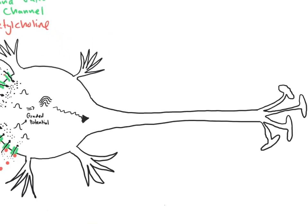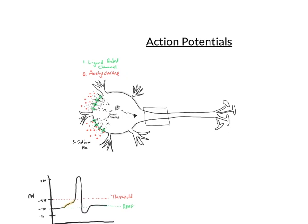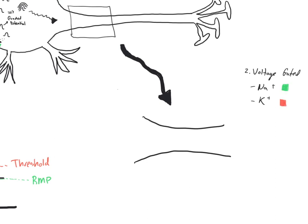We're going to come back up to this picture and examine this specific portion — we're going to zoom right into this portion of the axon. Let's start with our second type of channel. We said ligand-gated channels were our first type; here we're going to have voltage-gated channels. Remember there are two types of voltage-gated channels: sodium and potassium gated channels. We can now draw them and insert these channels into our axon.